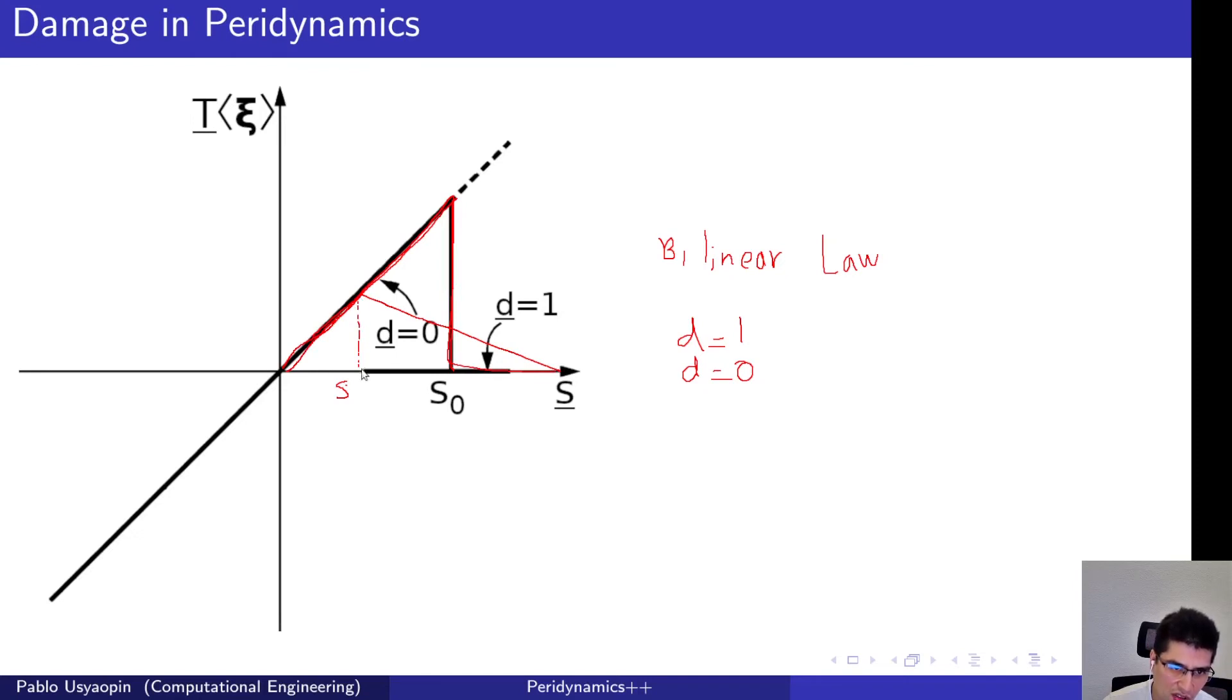...a critical stretch in which the damage, for instance here, would be zero. But then the damage would start to increase, eventually reaching one only until this point here. So the stretch continues here but the damage would be reaching only one at this point, as opposed to the other one.